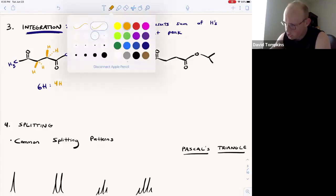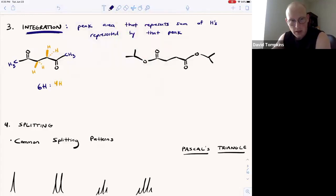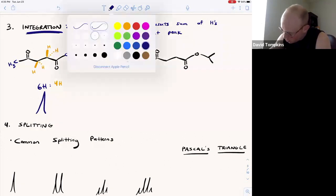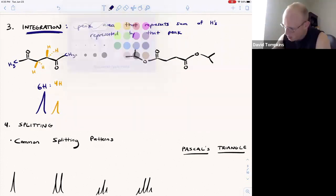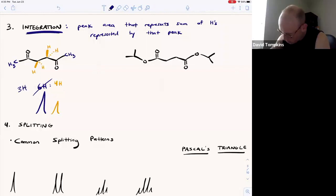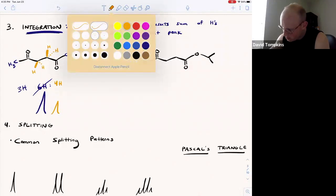So the integration ratio would be that the peak representing the methyls is a six to four ratio in terms of area compared to the peak representing the methylenes. Now, keep in mind that oftentimes this will be simplified, where six is simplified to three and four is simplified to two.